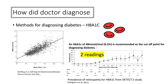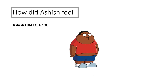Evidence for this cutoff point comes from numerous studies — for instance, the DTEC-2 analysis, which showed that beyond an HbA1c of 6.5%, the prevalence of diabetes-specific retinopathy significantly increases.